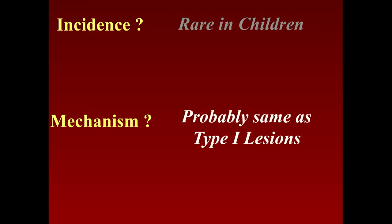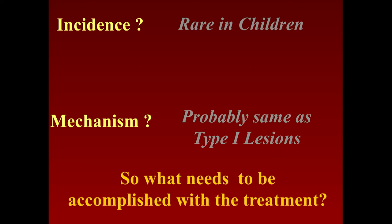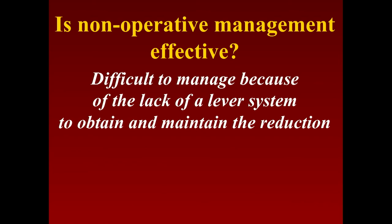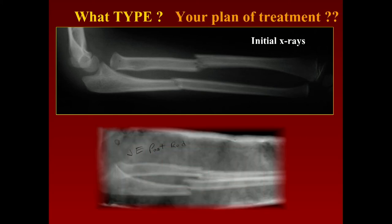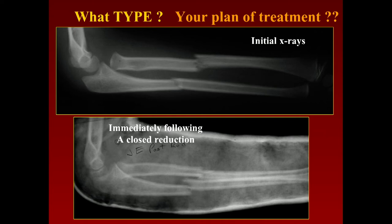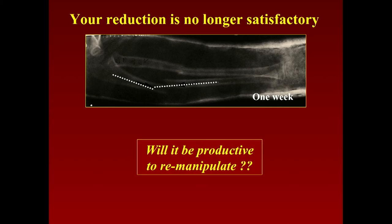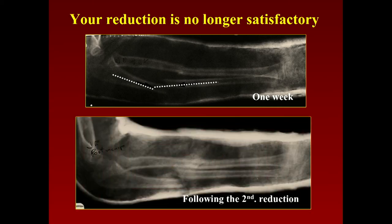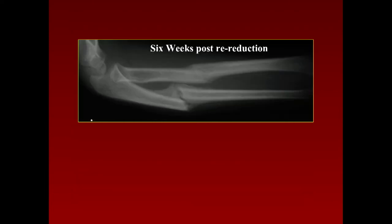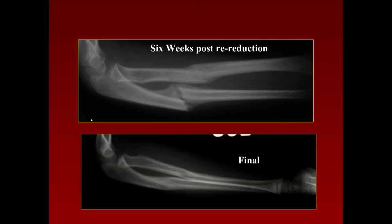Non-operative management is kind of difficult for type 4 — this is one that may require repeated manipulations. Here we see a type 4 put in a cast. It looked like they were lucky and got an acceptable reduction, though the radial head was still a little bit anterior. It comes back in a week and the reduction is lost — the radius and ulna are no longer satisfactory. You've got to re-manipulate it, and after the second reduction in six weeks post-reduction it's pretty well aligned, but it took a long time and required multiple reductions.